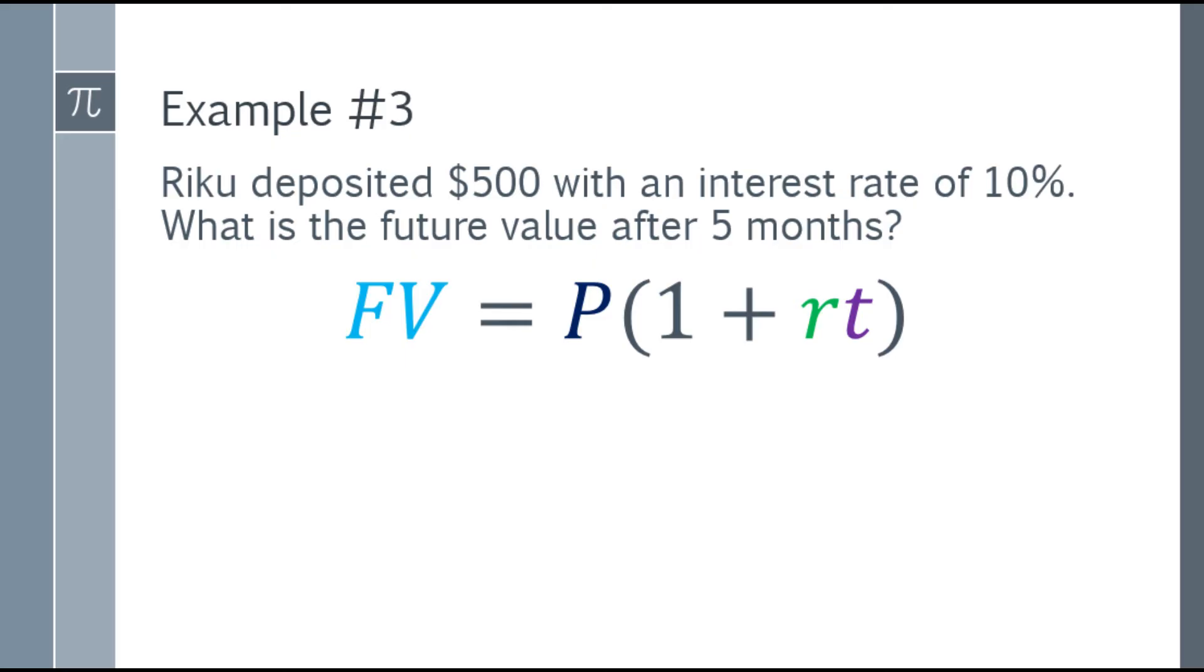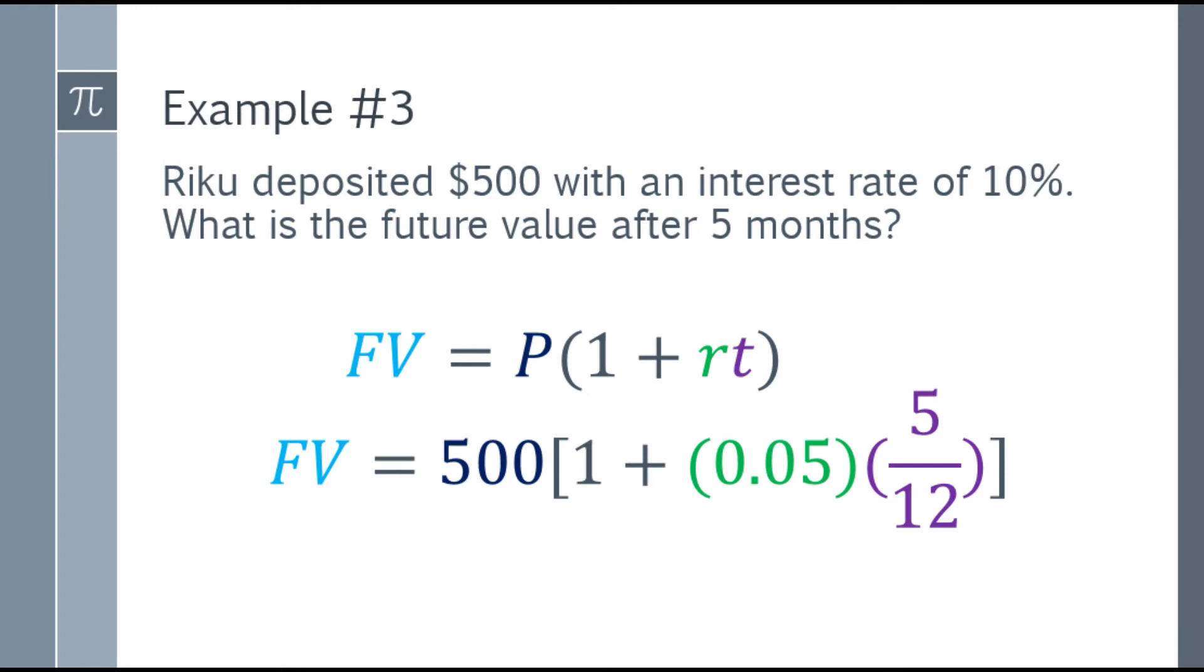Okay, so let's substitute the given. We have the future value is equal to 500 times the quantity of 1 plus, and you multiply these two. It's 0.05 times 5 over 12. Okay, where did the 5 over 12 come from? Remember, time in interest is always dependent on the year. So there are 12 months in a year. Since the given is only 5 months, so that's a fraction of it. It's not a whole year. It can't be 1 year. So 5 months, that will be 5 over 12.